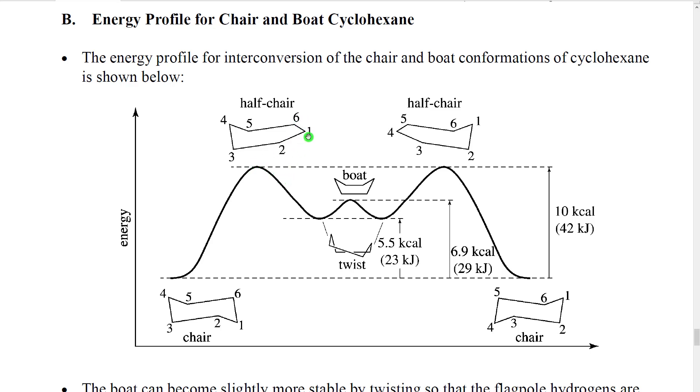We would then fold down as we continue to go. And in theory, we might come to a boat. The problem is that the boat itself has eclipsing and it has the flagpole interaction. So that actually doesn't represent a stable bottom of a potential energy curve. It actually represents a slightly higher amount of potential energy.